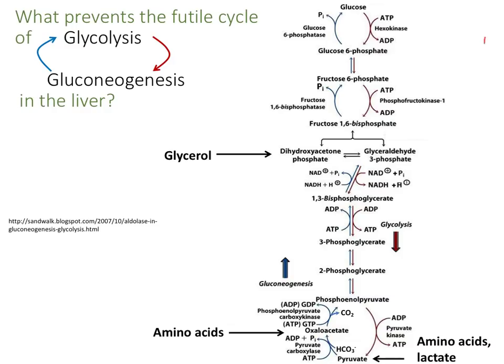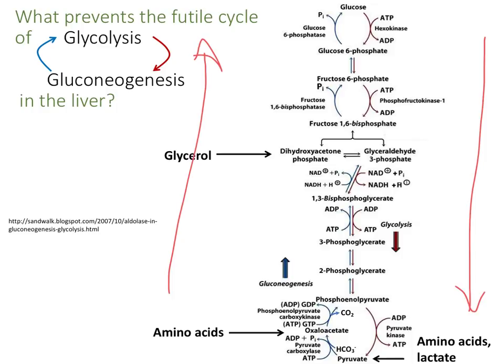What prevents a futile cycle of glucose being catabolized by glycolysis, only to have that pyruvate resynthesized to glucose by gluconeogenesis in hepatocytes? It has to do with the regulation of the key enzymes that differ between these pathways. When insulin levels are high and blood glucose levels are high, insulin signaling activates glucokinase (hexokinase in liver cells), phosphofructokinase 1, and pyruvate kinase. When insulin levels drop during fasting, those enzymes are all inhibited. Instead, the glucagon response — glucagon, cortisol, and low insulin — activates the gluconeogenesis-specific enzymes: pyruvate carboxylase, PEPCK, fructose-1,6-bisphosphatase, and glucose-6-phosphatase.